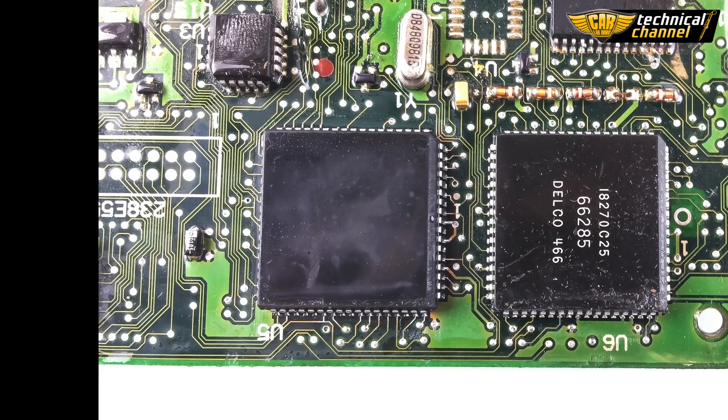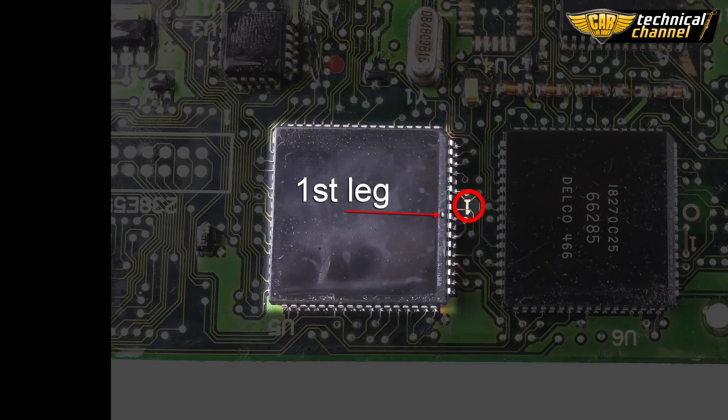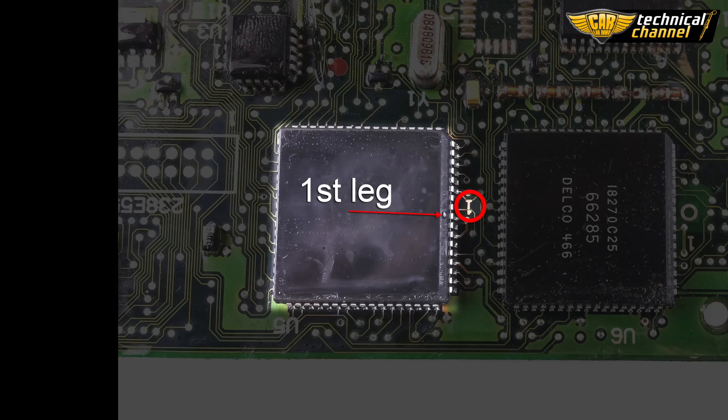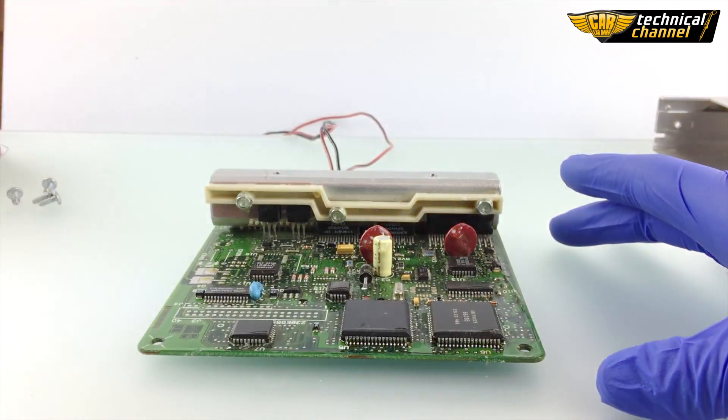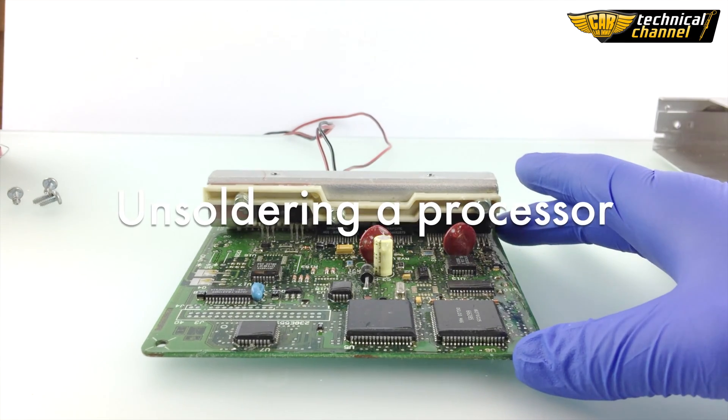Then we have to find the processor and mark the position of the first leg. To unsolder the processor I'm going to use a heat gun.